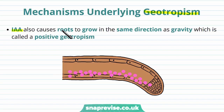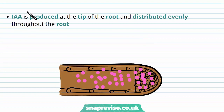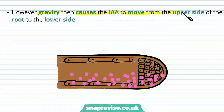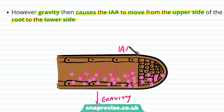Geotropism is very similar. The indole acetic acid also causes roots to grow in the same direction as gravity — positive geotropism. Even though roots grow away from light, they grow towards gravity, and this is again governed by IAA. The IAA is produced at the tip of the roots and distributed evenly throughout the root initially. But then gravity causes the IAA to move from the upper side of the root to the lower side — just like a magnet, pulling the IAA towards where gravity pulls. They build up on the lower side, giving a high concentration below and a low concentration on the upper area.